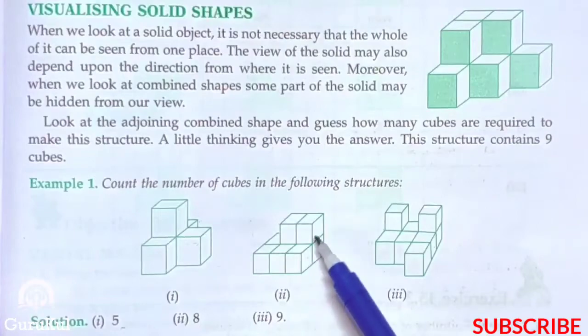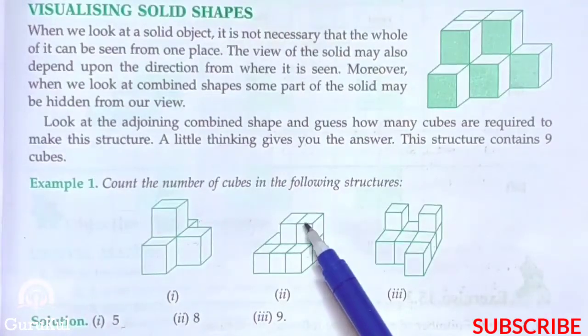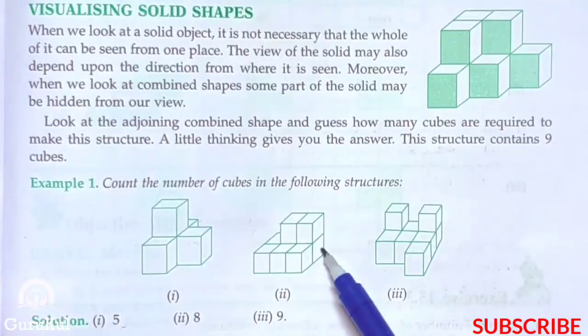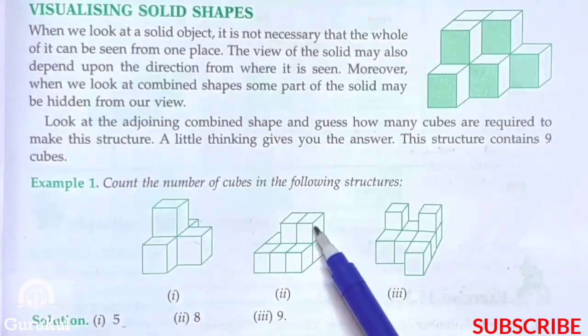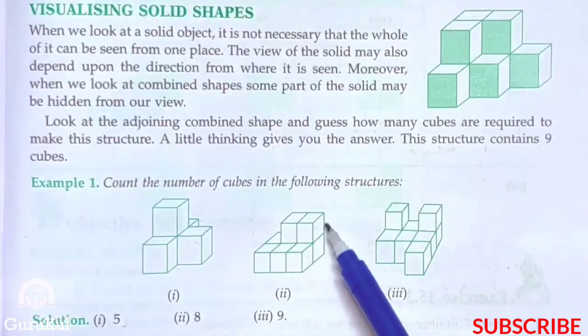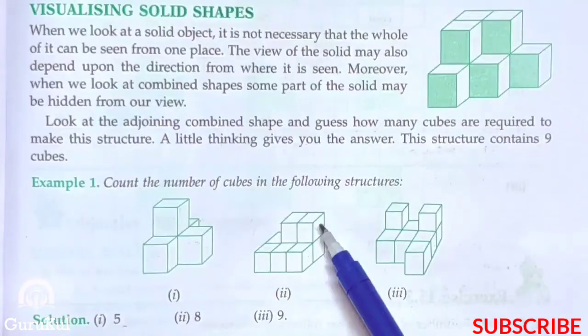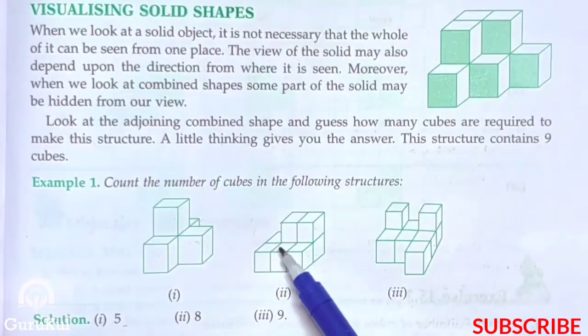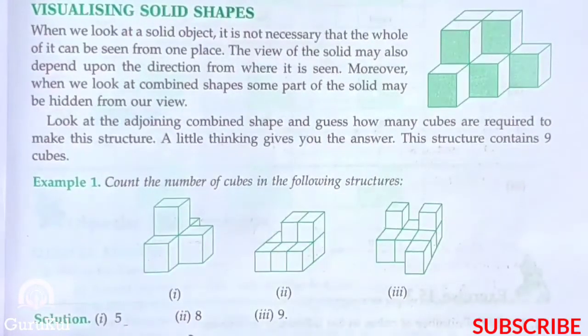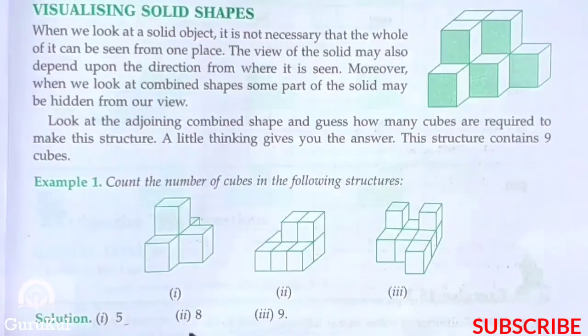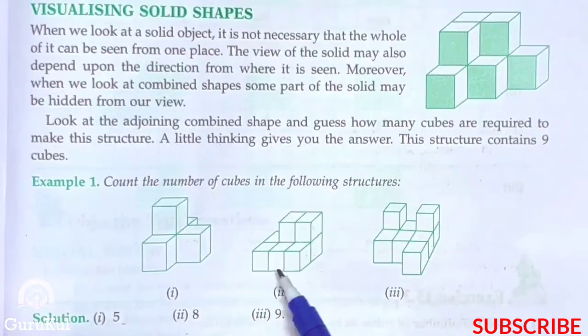For the next structure: 1, 2 — this is double, so that means it is 4. Then 5, 6, 7, 8. The answer is 8.